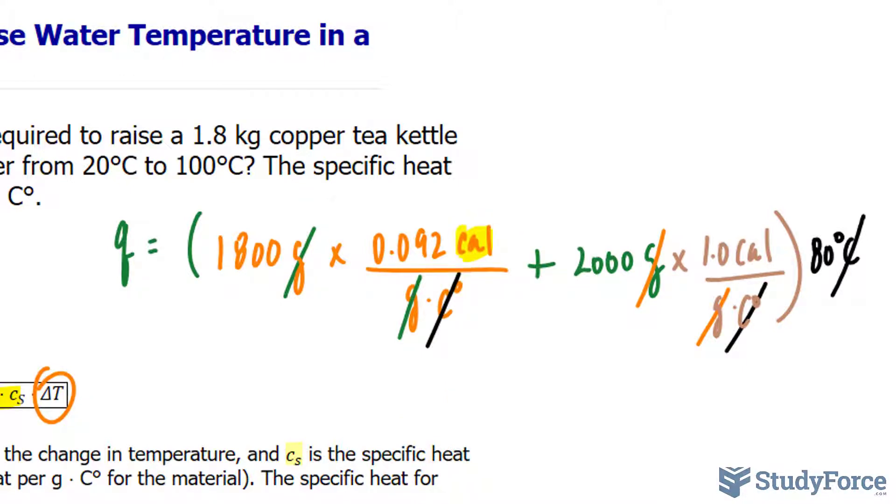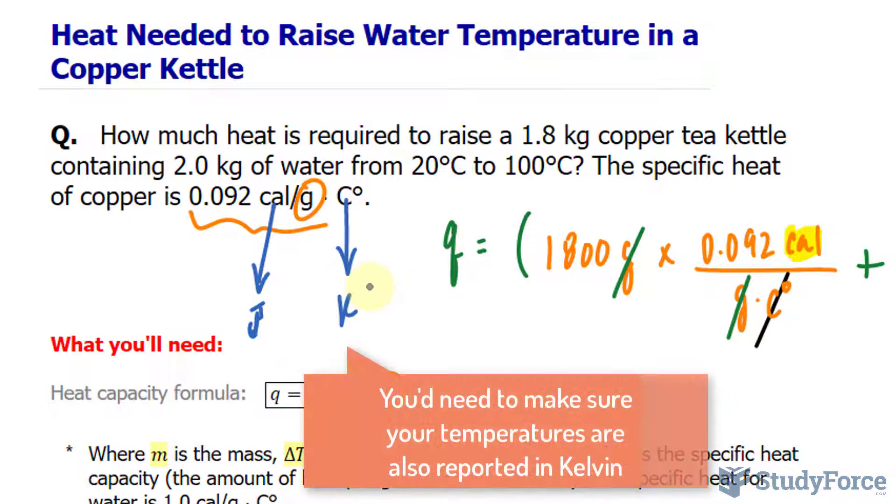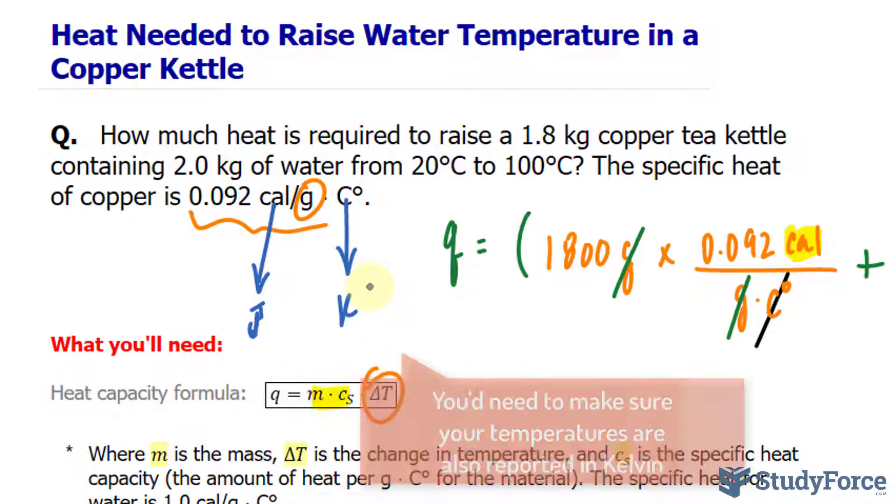Now, sometimes we want to report the amount of heat in joules. Right now it's in calories. There is a direct conversion from calories to joules and vice versa. So if you ever see a specific heat capacity written as joules instead of calories, and instead of Celsius, Kelvin, that's equally valid. But your final answer would then be in joules.